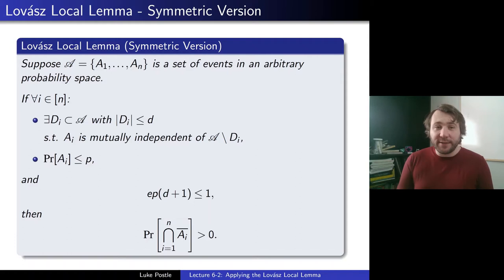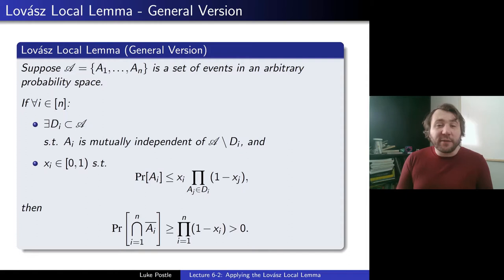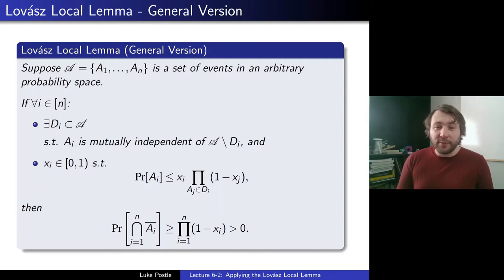Then we also had the general version, which was similar, but wherein instead of p and d, we instead suppose that there exist xi in [0, 1) strictly less than one, where the probability of Ai is at most xi times the product of (1 − xj) where the Aj's are in Di. So they're allowed to vary and depend as long as these xi satisfy the formula. Then we once again conclude that the probability none of them happen is positive. So that's our symmetric version and the general version.